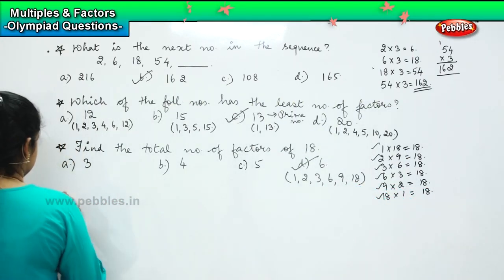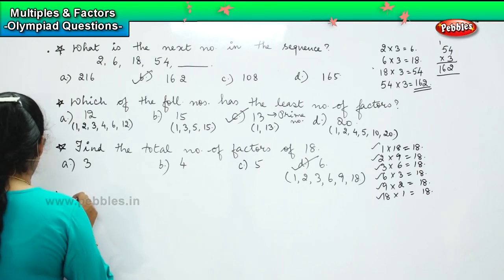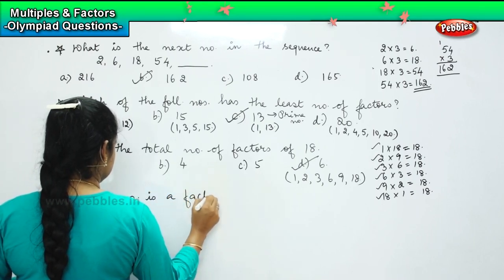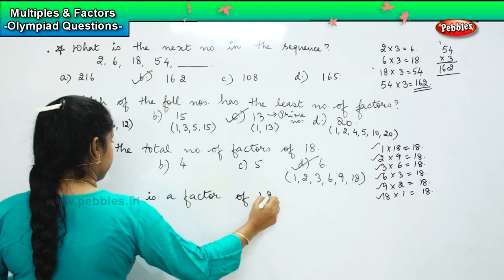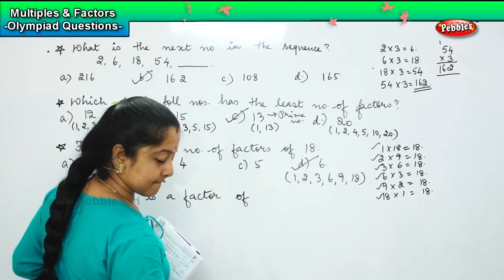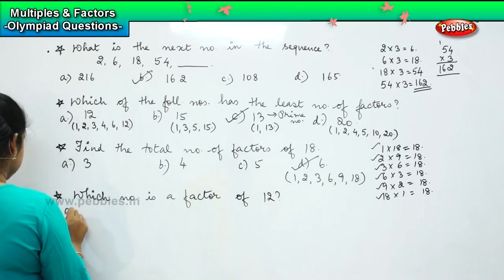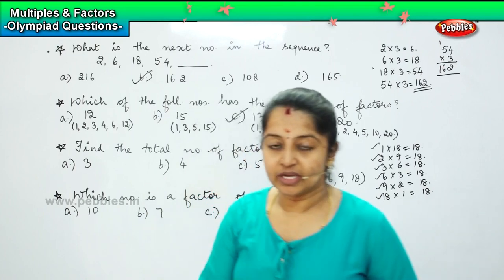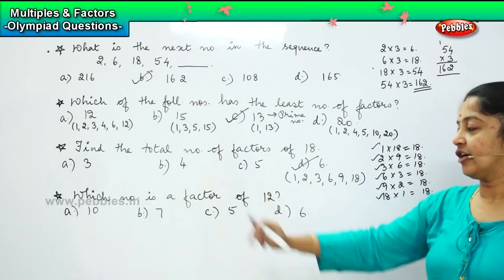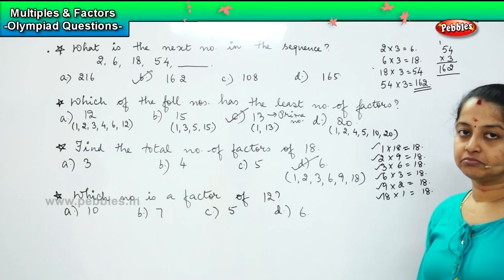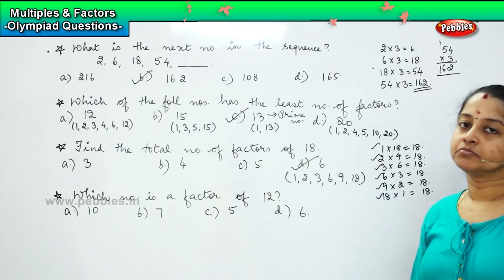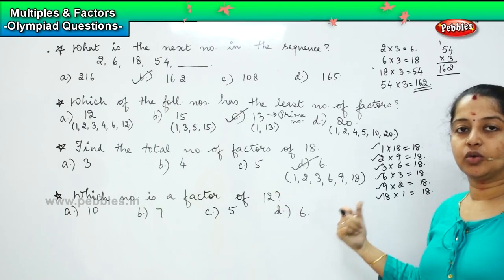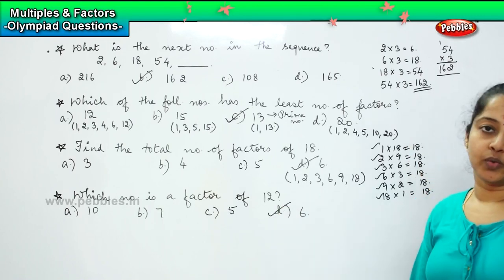The next question is: which number is a factor of 12? The options are: Option A, 10. Option B, 7. Option C, 5. And Option D, 6. Is 10 a factor of 12? No. Is 7 a factor of 12? No. Is 5 a factor of 12? No. Is 6 a factor of 12? 6 ones are 6, 6 twos are 12 — so 6 is the right answer, Option D.